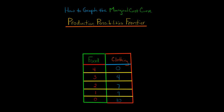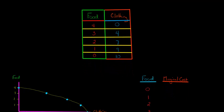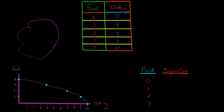We used the following data in a previous video to create a production possibilities frontier. We assumed that you and a group of friends were stranded on an island, where all you could produce was food and clothing. You had to make tradeoffs and think about how much food or clothing you could produce, and we graphed the PPF and plotted each point.